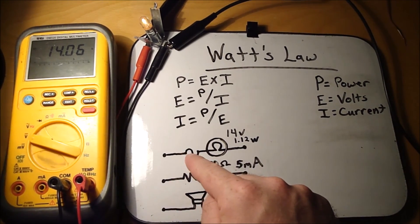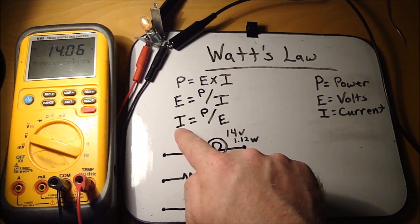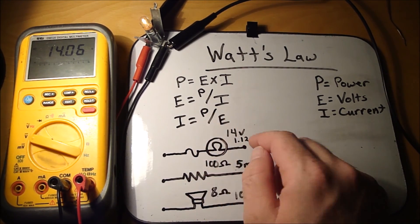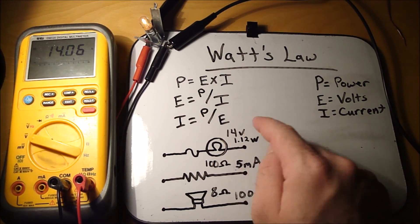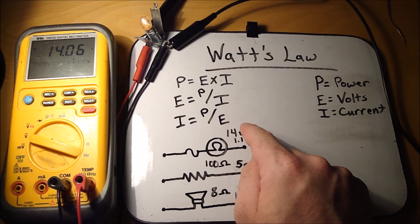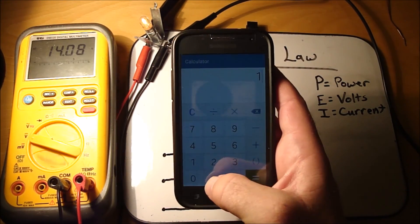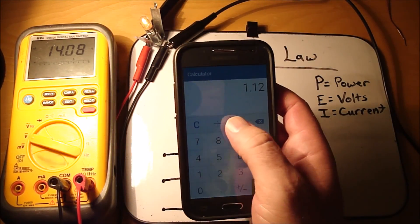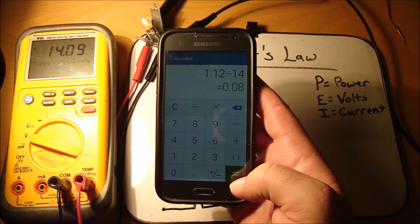So we want to calculate the amount of current, which is I equals P divided by E. So our power is 1.12 divided by E, which is volts, 14. Let's get out the calculator. Alright, so 1.12 divided by 14 equals 0.08.